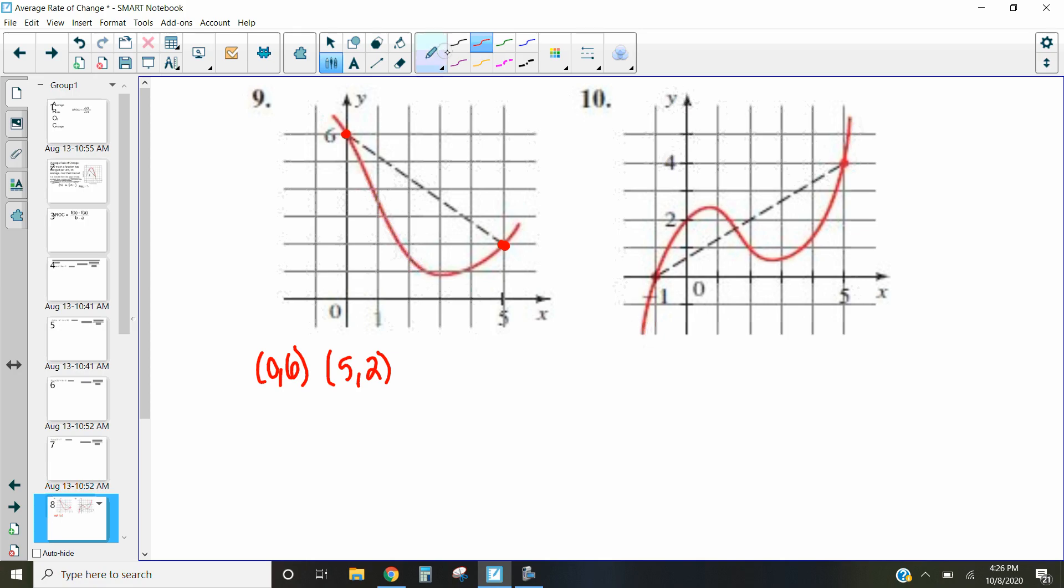If we want to use our average rate of change equation, the average rate of change is going to be the change in our y values over the change in our x values. So the change means the difference. And a lot of the time we write that to find the slope of y2 minus y1 over x2 minus x1. And that's what we're going to do here.